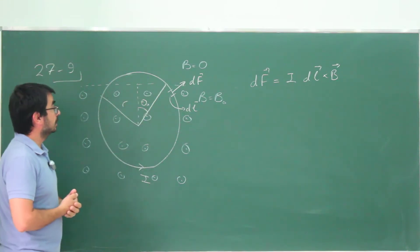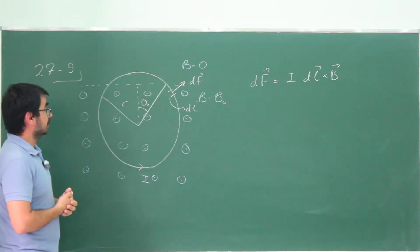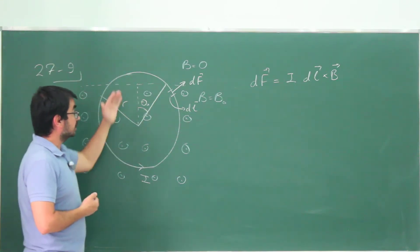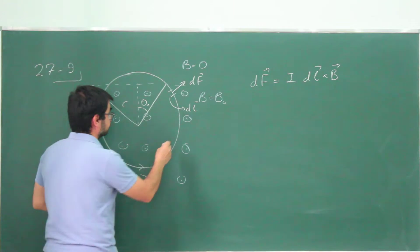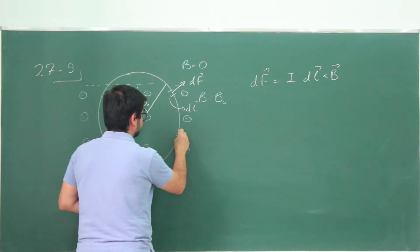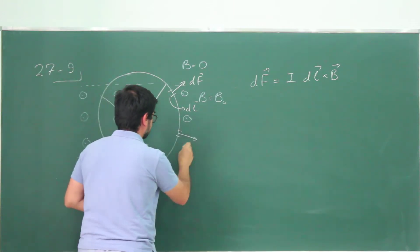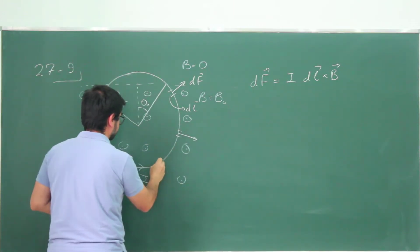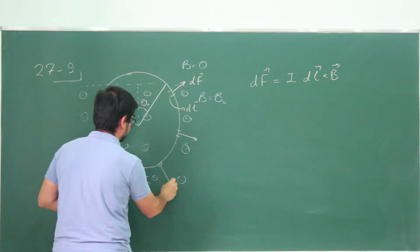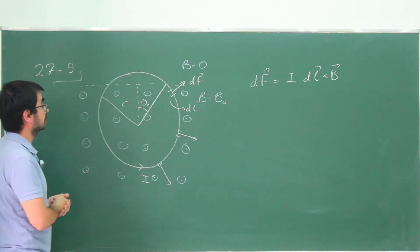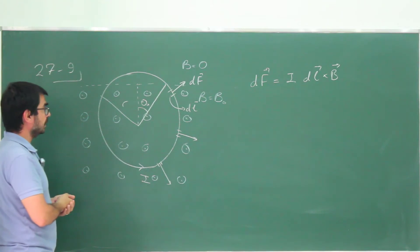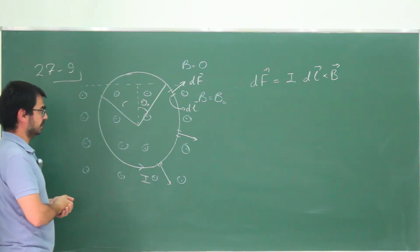In this case, the force turns out to be pointing away from the center. This argument applies all over — here it's going this way, here it's going that way, and so forth as we go around the circle, and we are going to have some sort of symmetry.